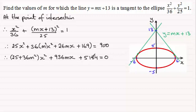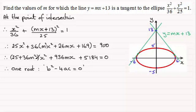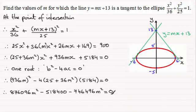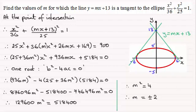Because we're going to have one root for this quadratic — just one point of intersection — then b squared minus 4ac equals zero. Knowing that b is 936m, a is 25 plus 36m squared, and c is 5184, we substitute into that condition. Expanding and grouping the m squared terms and adding 518,400 to both sides, then dividing both sides by 129,600, gives us m squared equals 4, leading to m equals plus or minus 2.